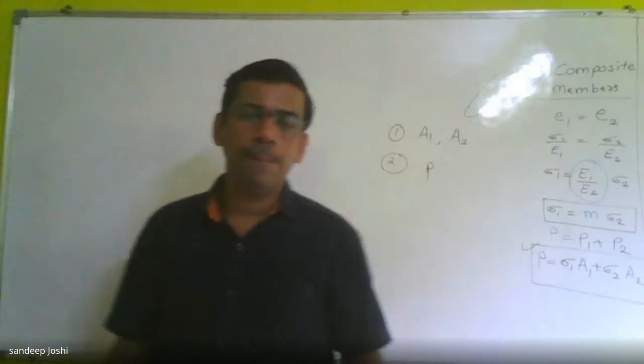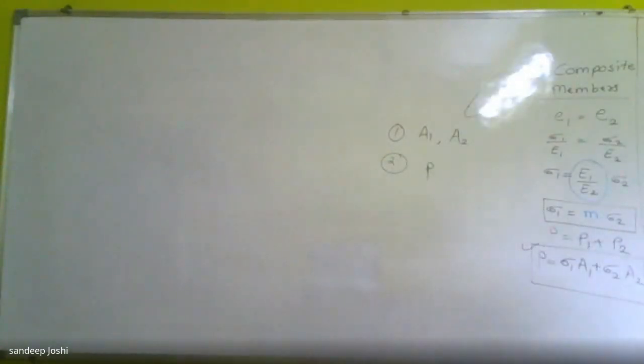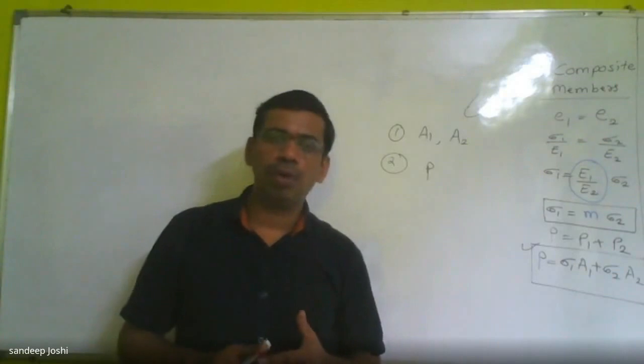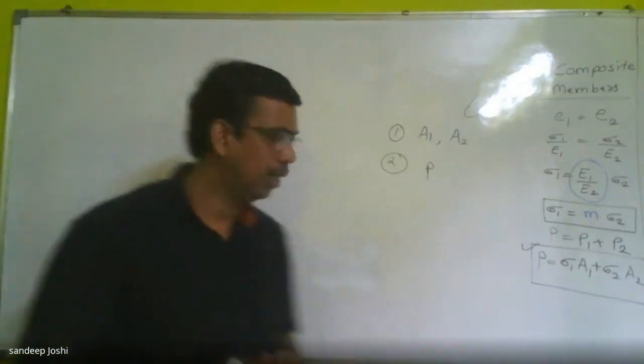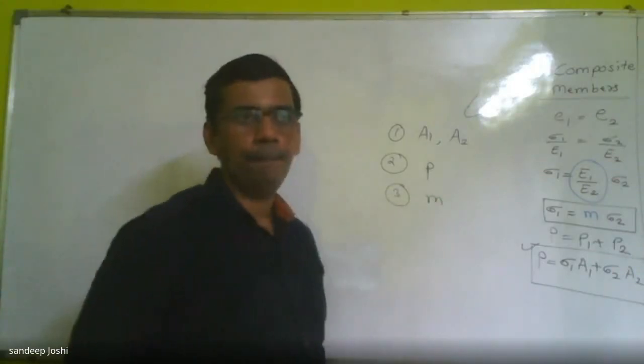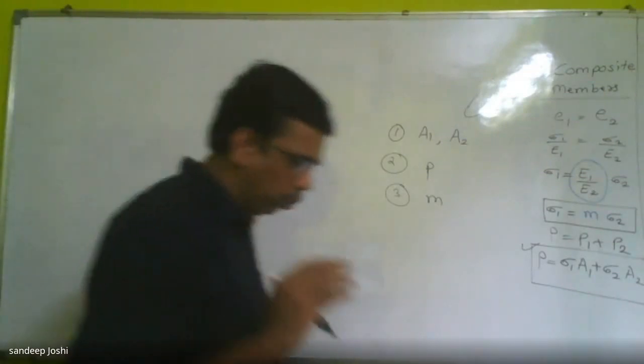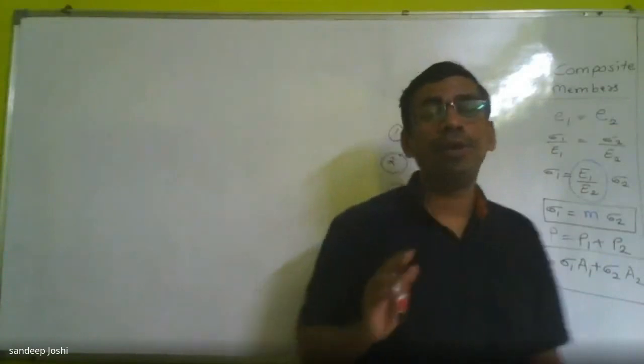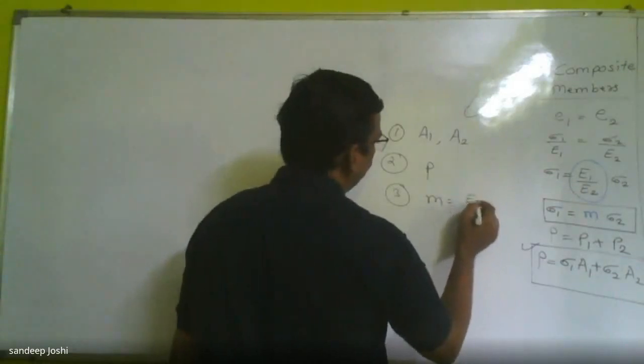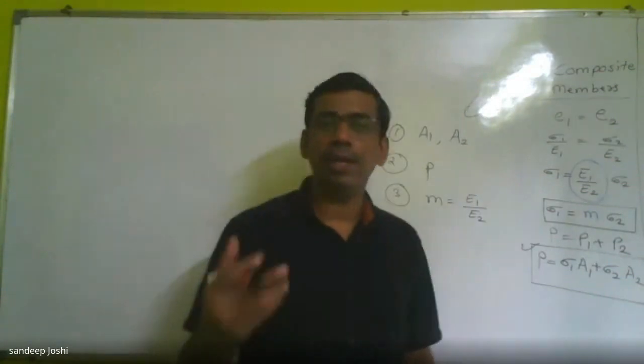The answer can be written as P is equal to σ1A1 plus σ2A2. When we find out numerical areas, second one we try to go for value of P, the load applied. And third one, we try to find out a value which is called m. What is the meaning of this m? m means modular ratio. m can be calculated using the formula E1 upon E2.